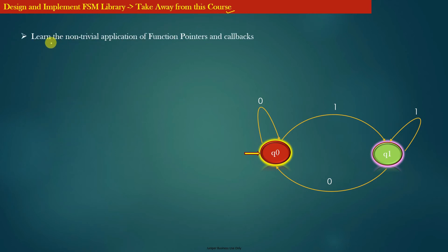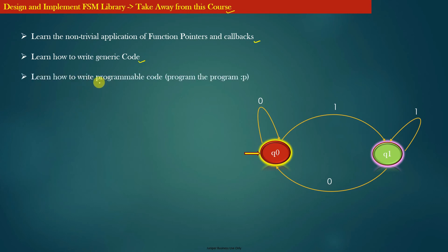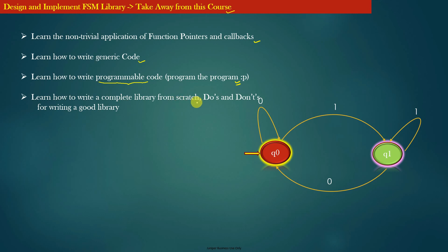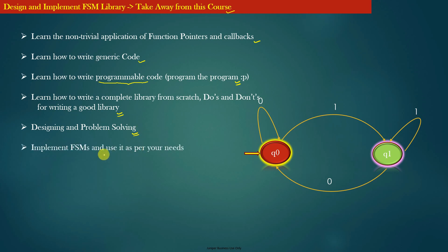After doing this course, you will be able to learn the non-trivial application of function pointers and callbacks. You will also learn how to write programmable code — that is, programs that program other programs. Almost all libraries share the property that they should be programmable by the application and perform as instructed. You will learn how to write a complete library from scratch, including the do's and don'ts of writing a good library. The end product of this course is a fully fleshed, working finite state machine library that your application can use for pattern matching, validation, or performing computations. Good luck — I hope you enjoy this course!